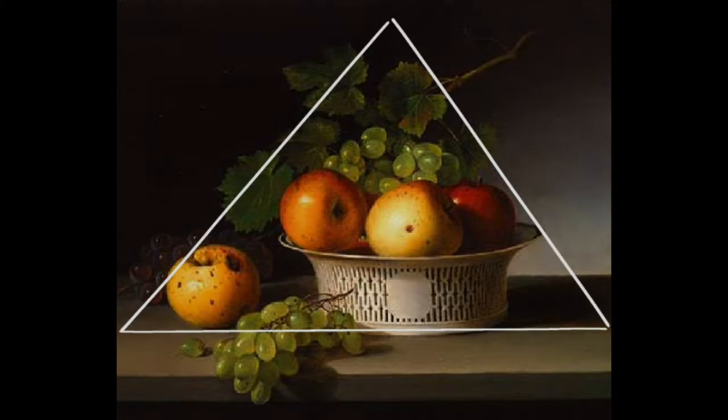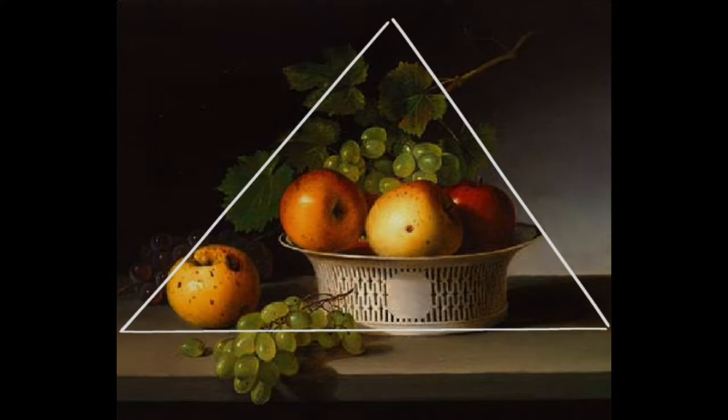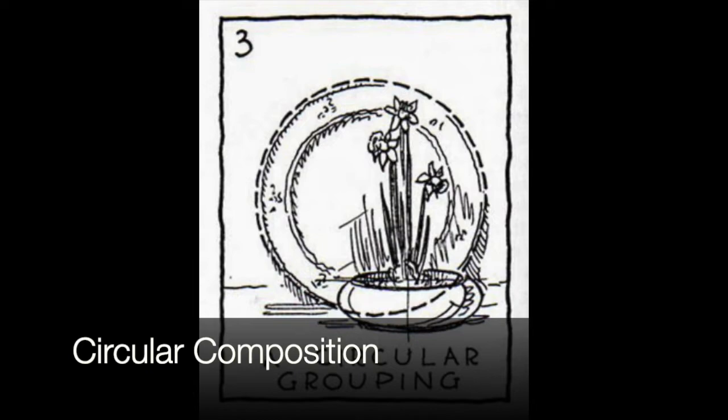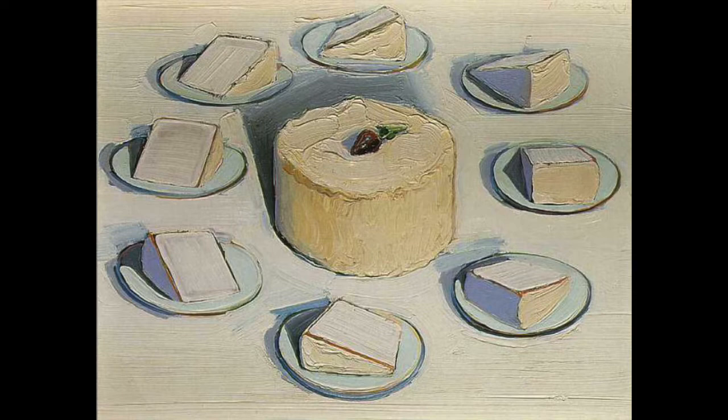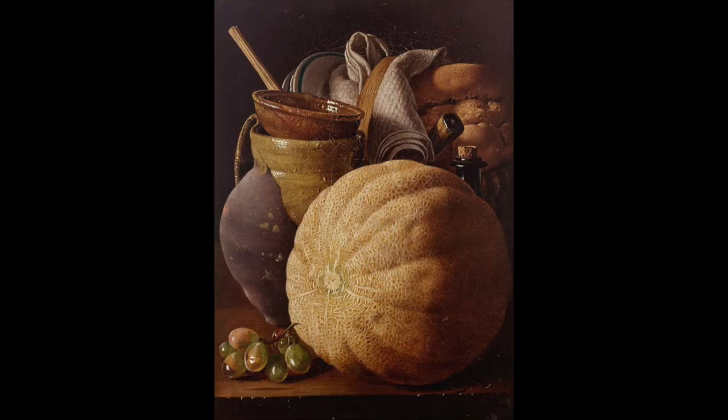A circular composition is not quite as frequently used, but the objects may be of various shapes, and the grouping of the objects stays within a circular or elliptical shape. You can see how they create this sort of circular shape just by the objects and where they're arranged on the page.